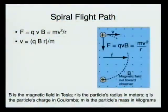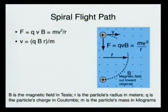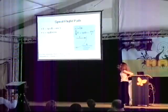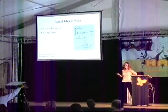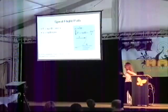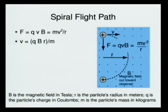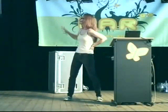Talking more about the spiral flight path: the force is QVB. That's the scalar quantity of the force, and that's a centripetal acceleration. The formula for centripetal acceleration is MV² over R — that's just a set thing for something that's being curved. So you take those two parts of that equation and rearrange them. You get that the velocity is QBR over the mass.